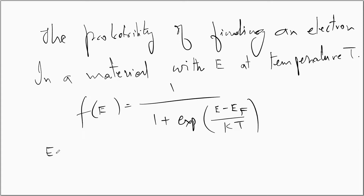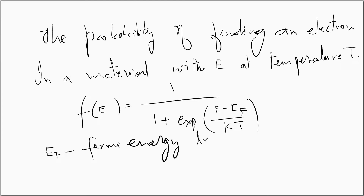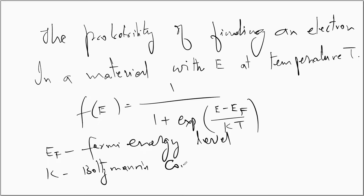E_F is called the Fermi energy level. K is the Boltzmann constant. T is temperature in Kelvin.